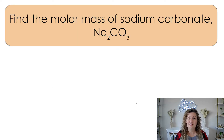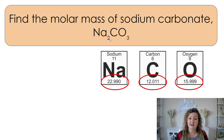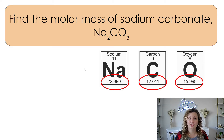If we're finding the molar mass of a compound, we need to look at each element individually on the periodic table, just like we did with carbon. Then we're going to take how many atoms of each element we have, multiply by that number, and then add them all up to get a big sum.